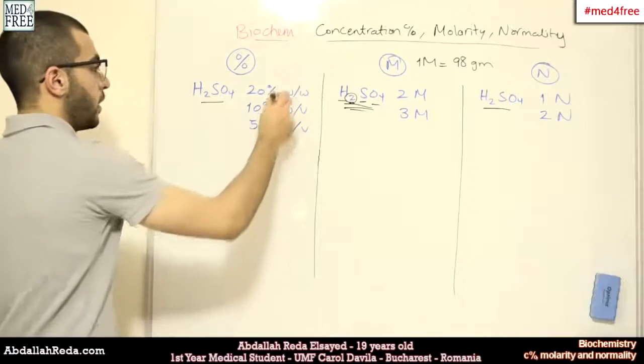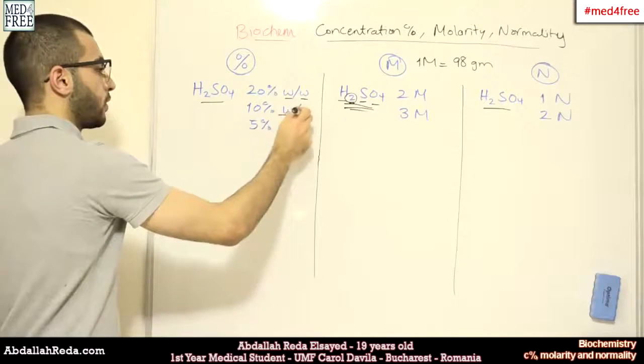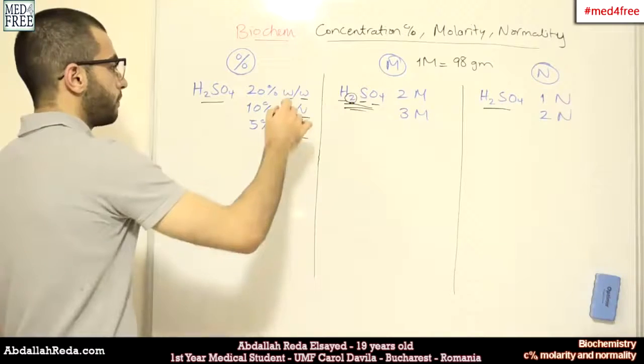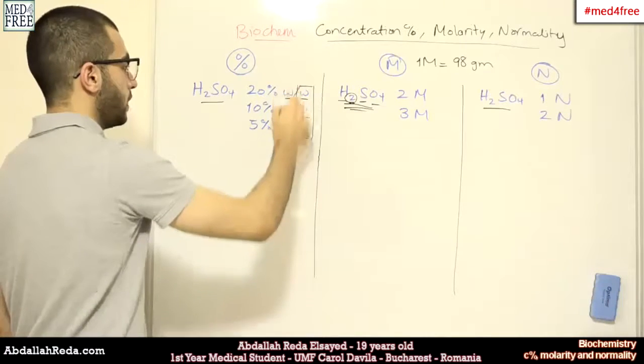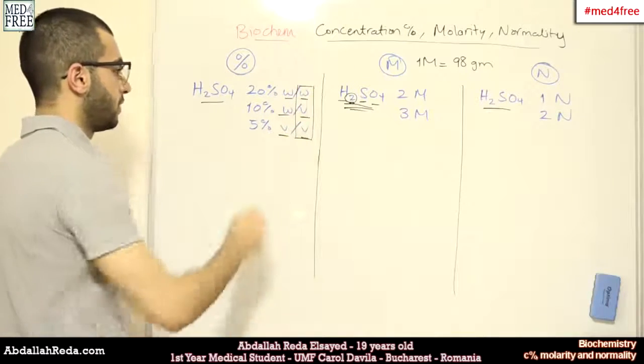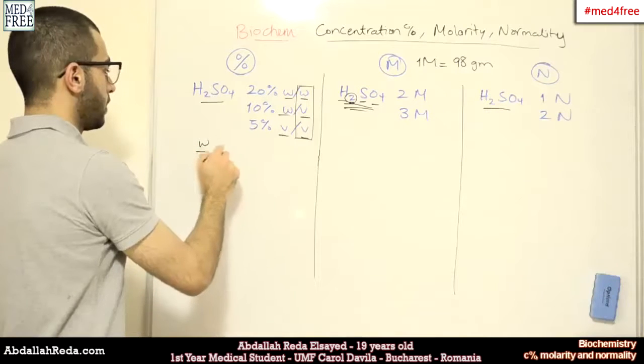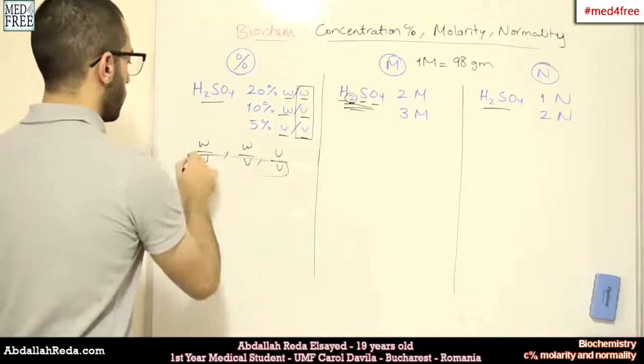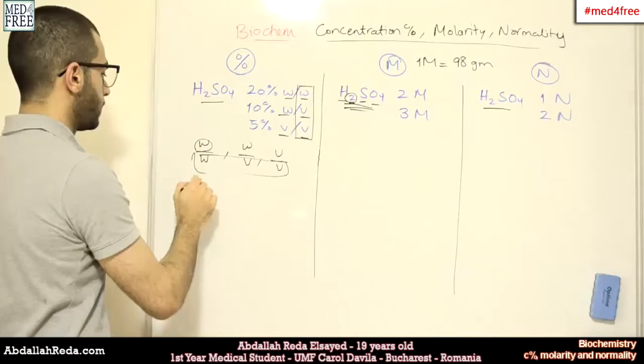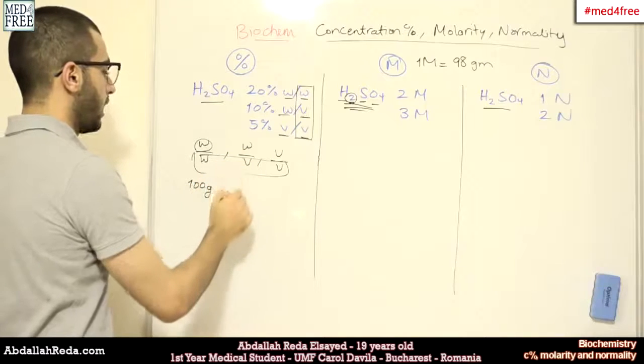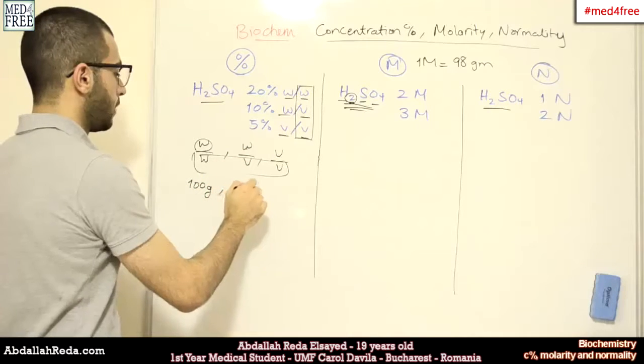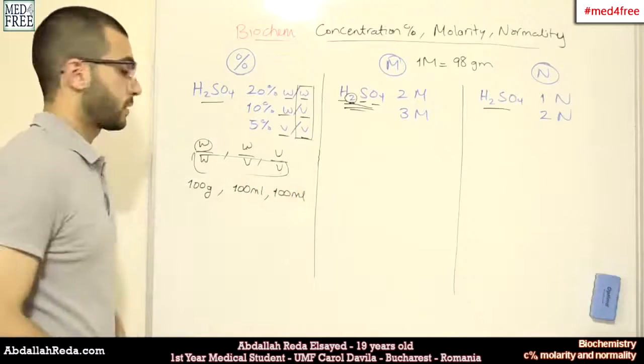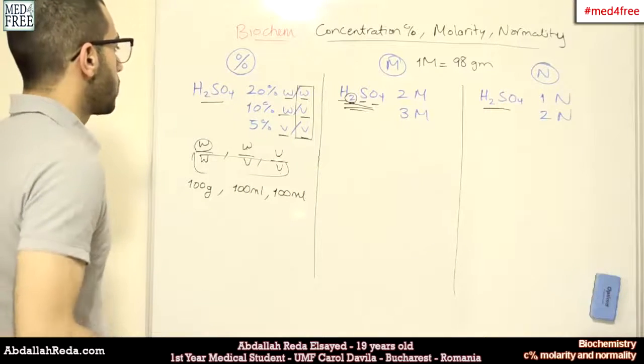One of them is weight per weight, weight per volume, and volume per volume. And the concentration percentage in these values in the denominators, we are always dealing with 100. So, this is the weight per 100 grams, the weight per 100 milliliters, the volume per 100 milliliters.